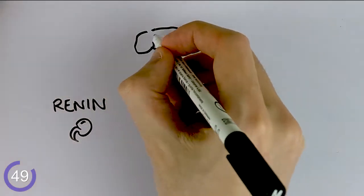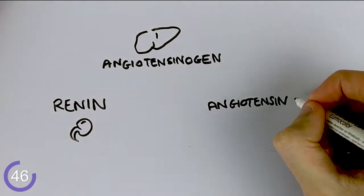It starts with the release of renin in the kidney, which converts angiotensinogen made in the liver into angiotensin 1.